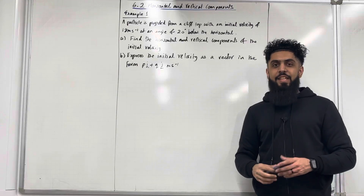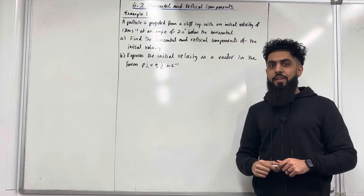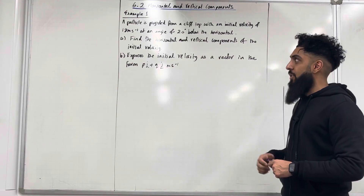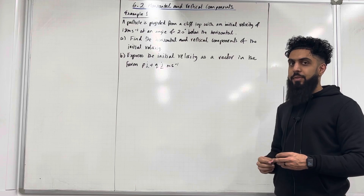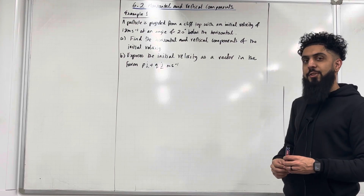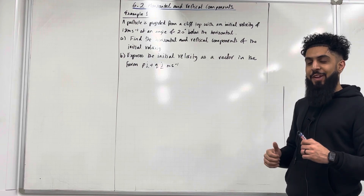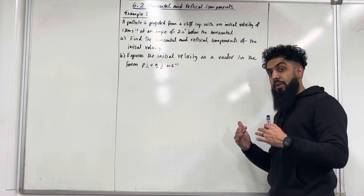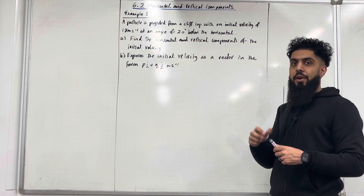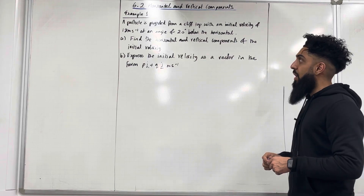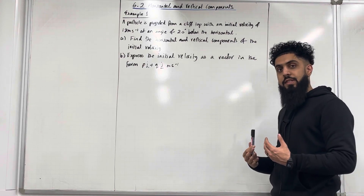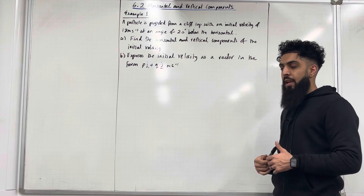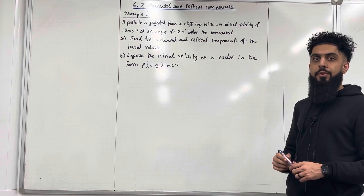Welcome back ladies and gents. In this particular teaching video I'll be looking at 6.2 horizontal and vertical components. 6.2 represents chapter 6, section 2 of the Pearson A-Level Applied Master A2 textbook. I'm going to start this teaching video by going through three scenarios of modelling the horizontal and vertical components for the initial velocity of a projectile, or particle.